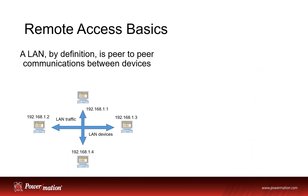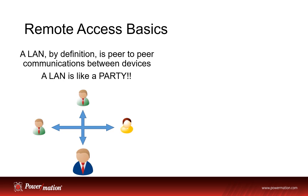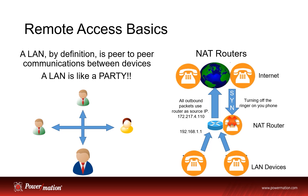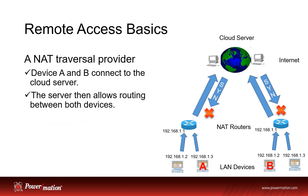The next topic is remote access basics. A local area network by definition is a peer-to-peer network where each device can talk to all other devices — it's like a party. Routers are used to segment one network from another. The router will allow outbound communications and deny unsolicited inbound communications. It's like turning off the ringer on your phone: you can dial out but you can't dial in.